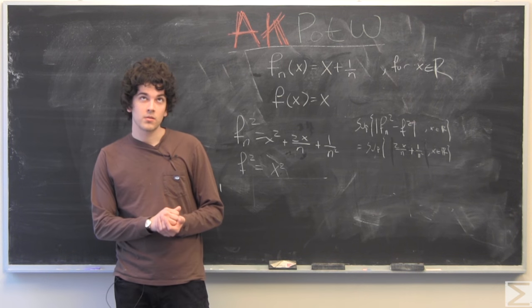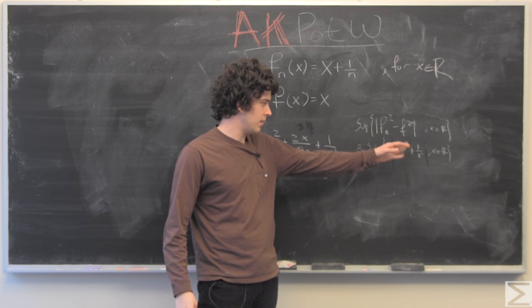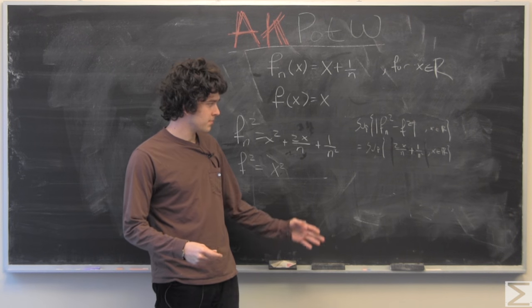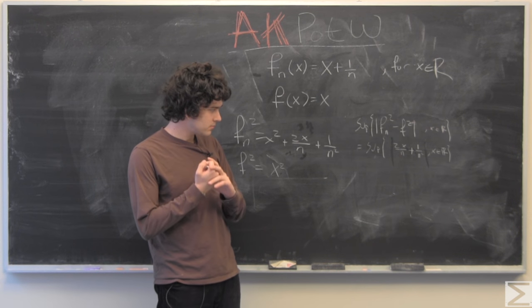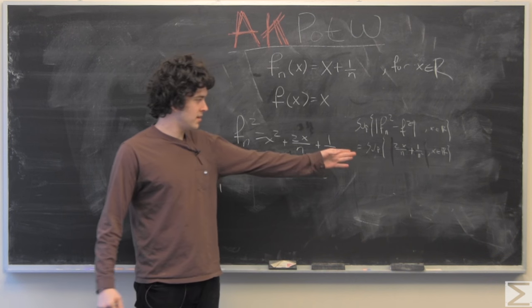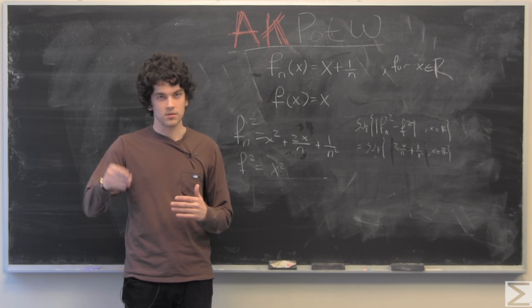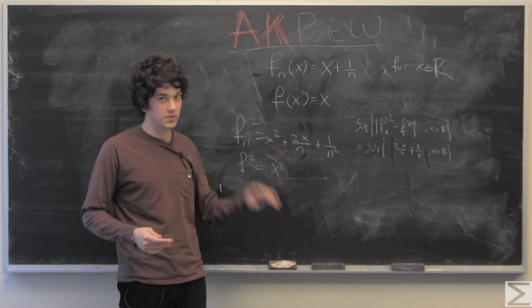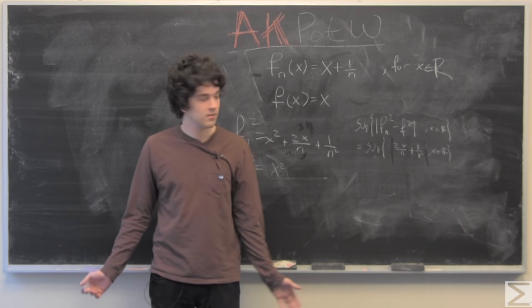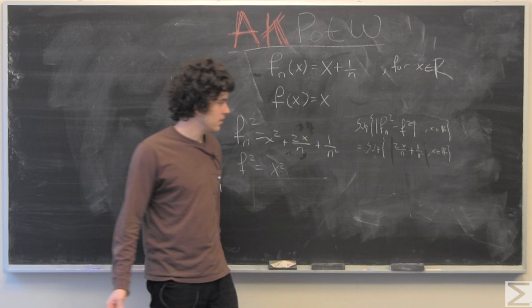And so if you think about the supremum of 2x over n plus 1 over n squared, if you look at the supremum of that, you can imagine any n, but we're taking n sequentially in our sequence of functions. You can imagine any n, but then you could imagine an x to be greater than that n. So this indeed does not go to zero.